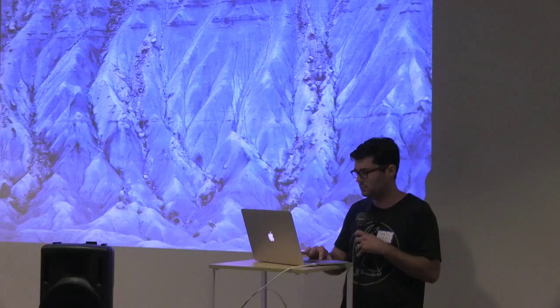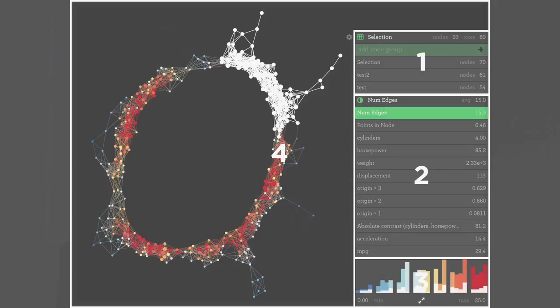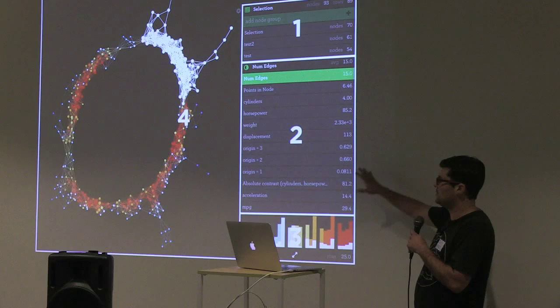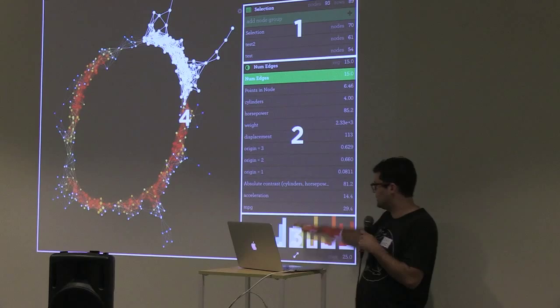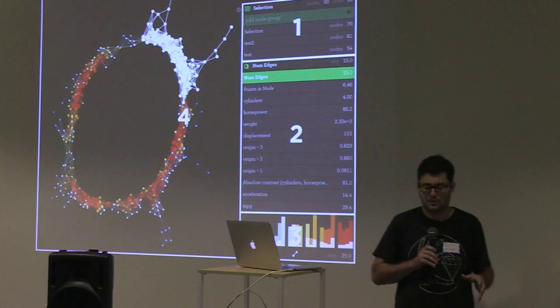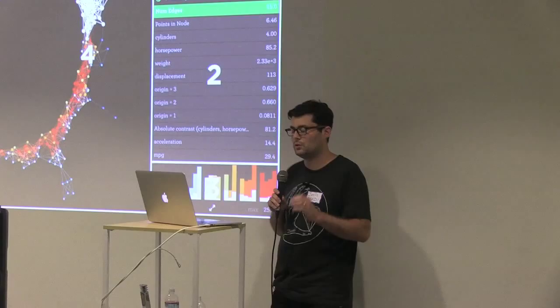So how do we stitch this all together? We ran into some unique challenges. When we look at this display, we've got four mostly independent views: the graph representation, the list of groups, the list of colorings, and the histogram. They share the same model, and they also share some interaction state — the notion of a node selection is relevant to all of these views. They want to listen for that and re-render themselves when that event happens.